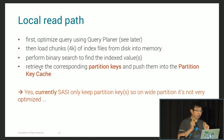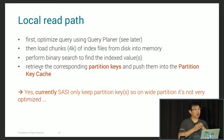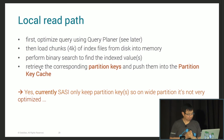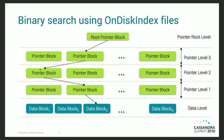One important detail: currently SASI only keeps the partition key offset in the index structure. So if you have very wide partitions, it will not be as efficient as you might think. The index file has a root pointer block, and it performs binary search going down to the pointer level until reaching the data block where you find the offset of your partition. For numeric values, each pointer block has min and max values, so the search goes left if smaller, right if larger — basic binary search.